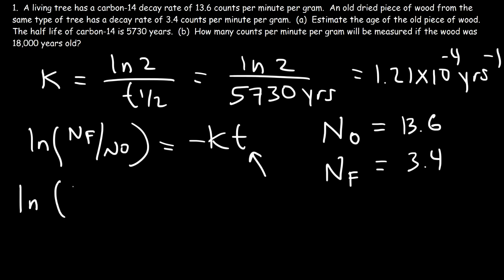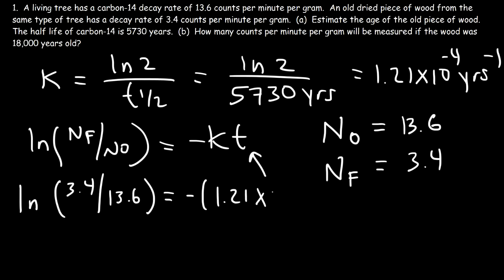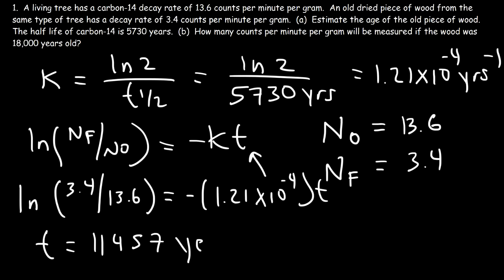Let's plug everything into the formula. The natural log of 3.4 divided by 13.6 equals negative 1.3863. Dividing that by negative 1.21 times 10 to the minus 4 gives T equal to approximately 11,457 years, since I rounded these values.